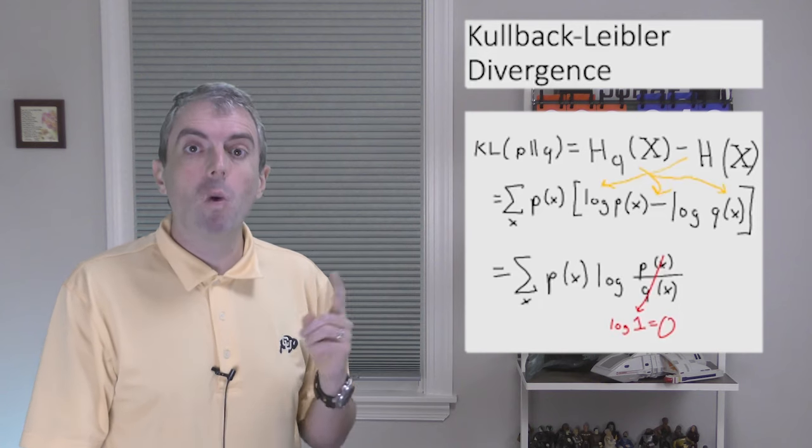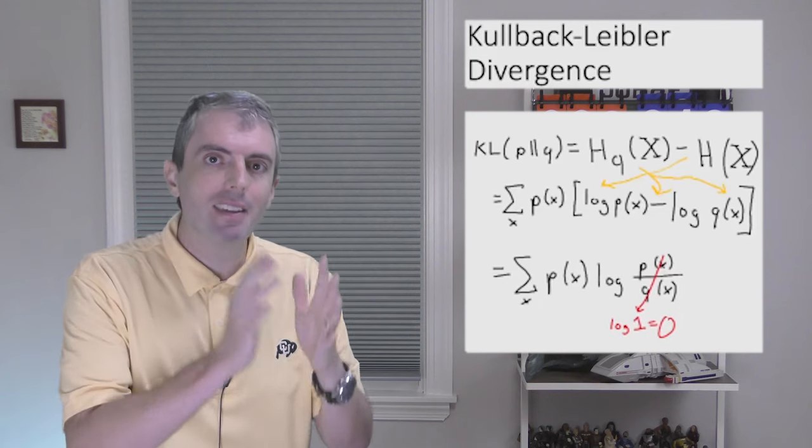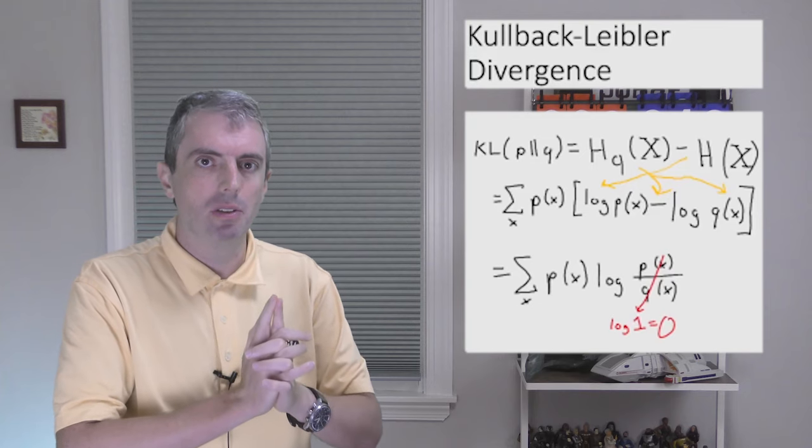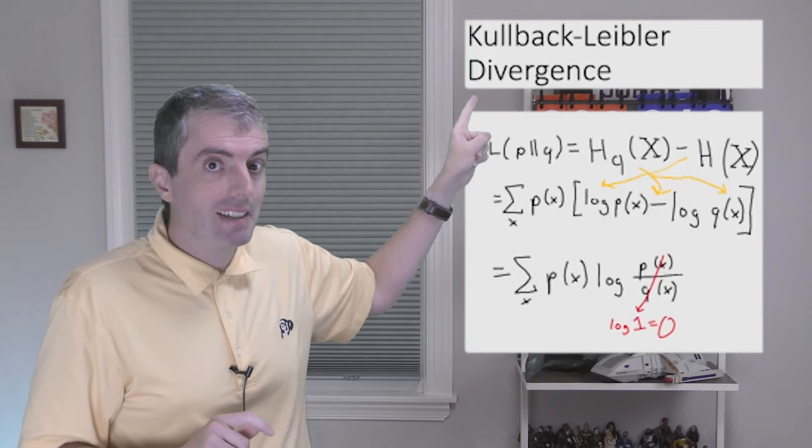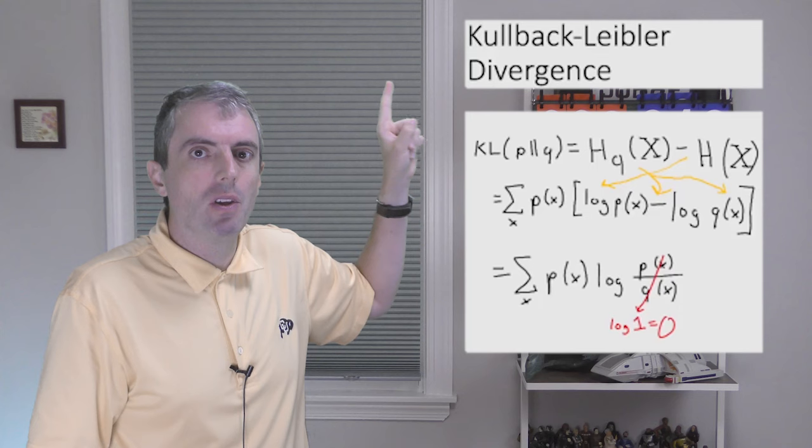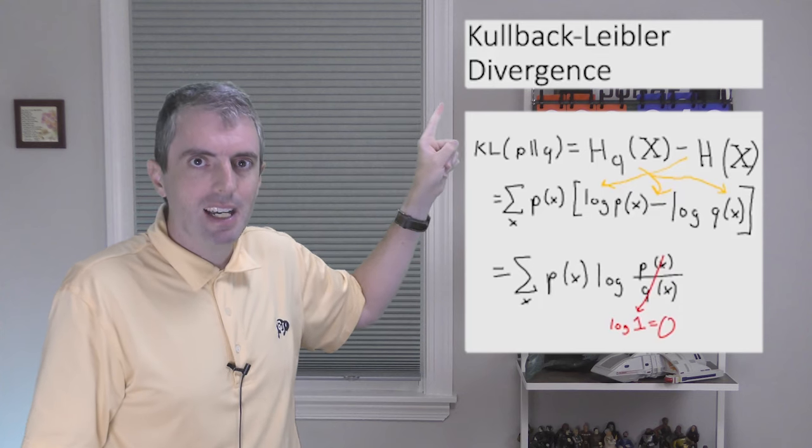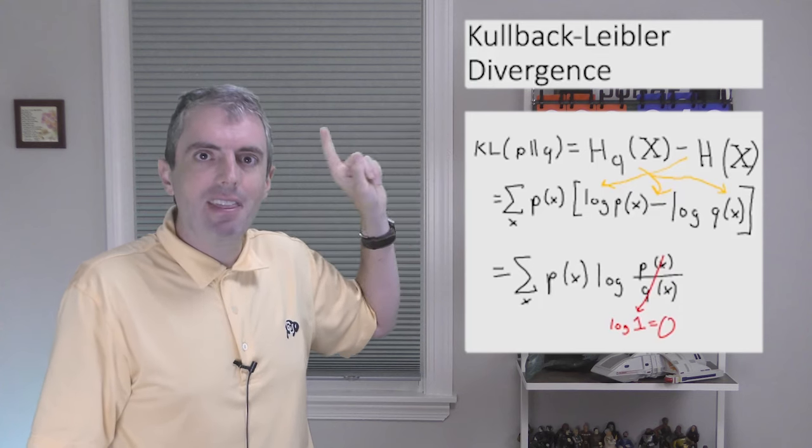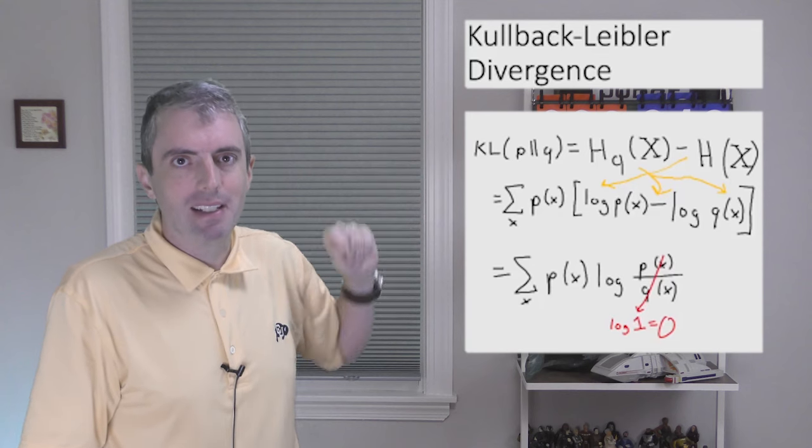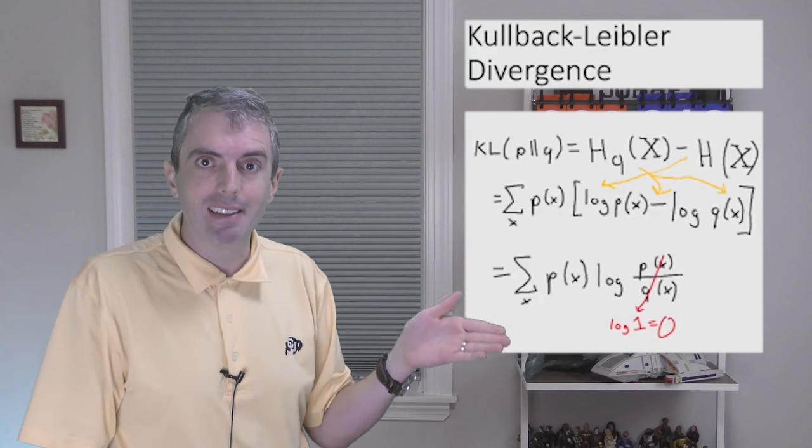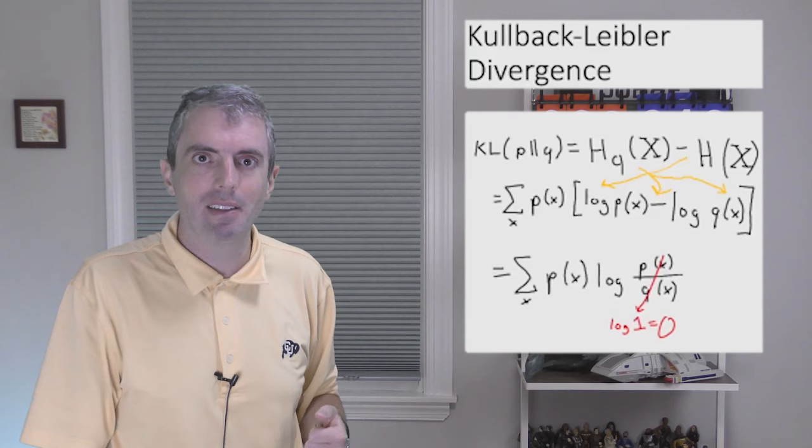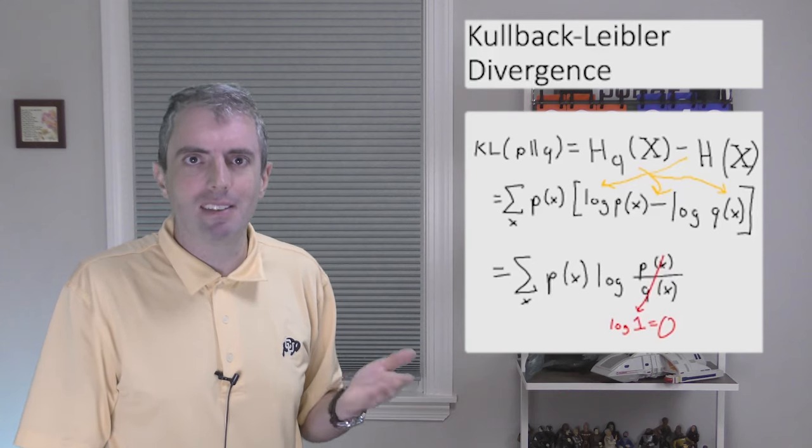Before we move on, one bit of math that sometimes confuses people is, where the heck did the minus sign go to? Both of these entropies have a minus sign. But we're subtracting out the normal entropy, so the two minuses cancel out, and then the cross entropy keeps the minus sign, which is why it's minus log Q. And then the overall expression has no minus sign.